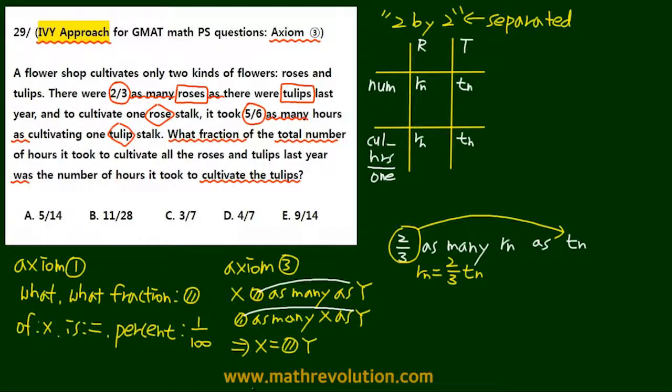Now the second question, second part of the question was rose hours. So rose comes in front. So Rh is 5/6 as many as Th. So here we have Rh in front, and the number will be attached to Th. So the equation becomes Rh equals 5/6 Th.